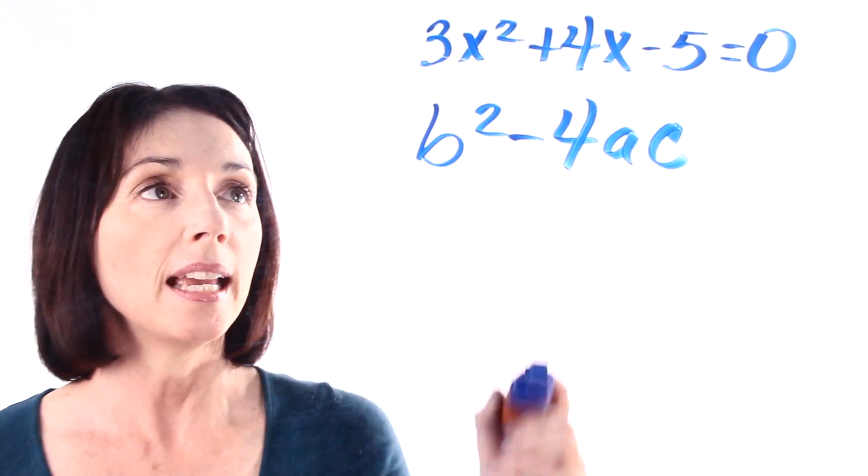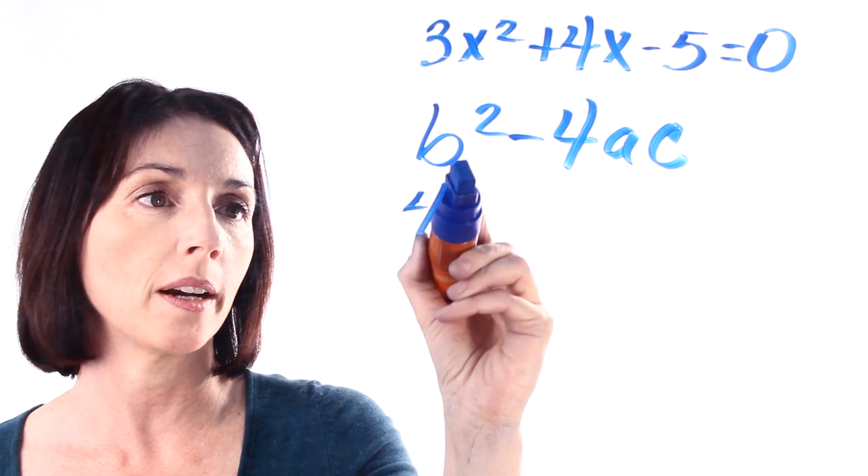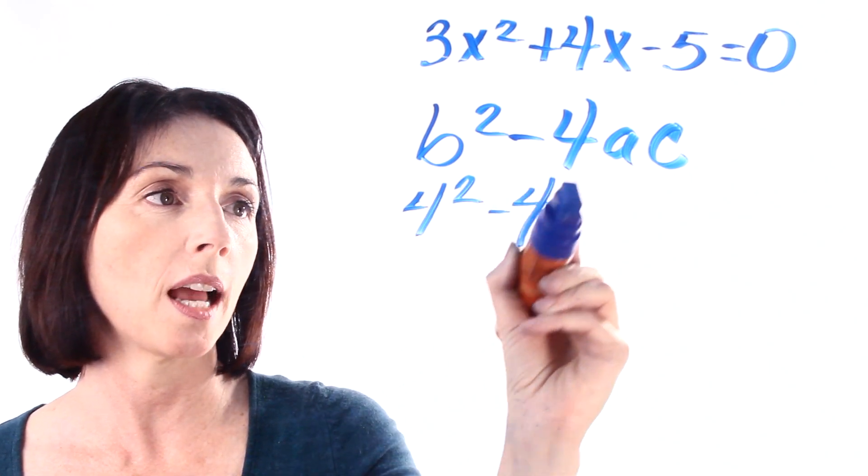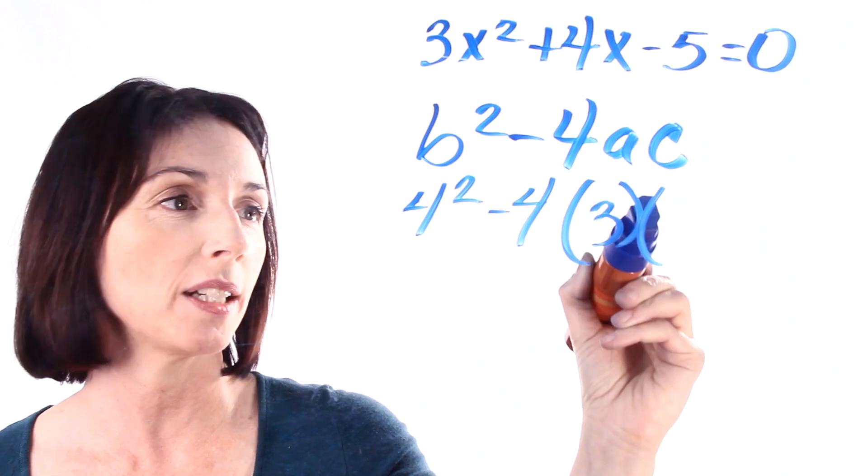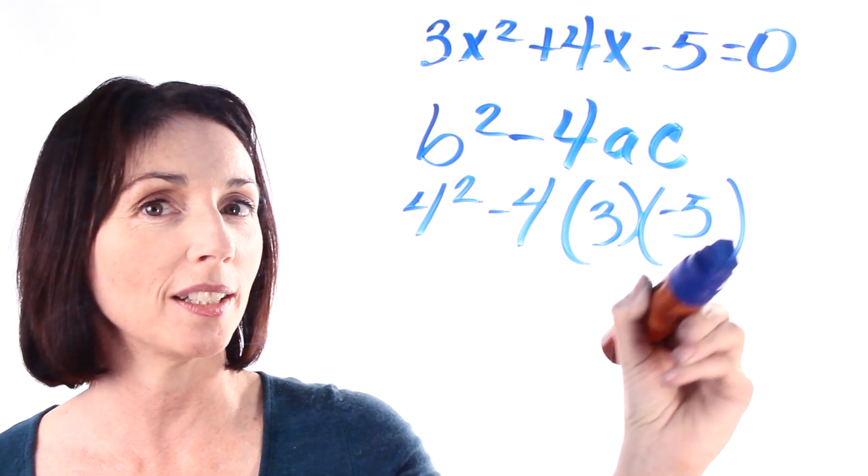So let's see what we get. In our case, b is 4, so we have 4 squared minus 4 times a, which is 3, times c, which is minus 5. Very important that you get the signs right.